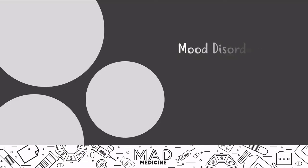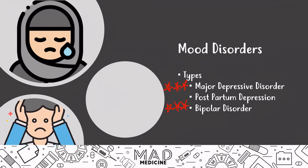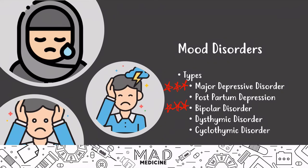When it comes to the USMLE Step 1, there are several types of mood disorders you definitely need to know. They are: major depressive disorder, or depression — a very important one, definitely know this; postpartum depression; bipolar disorder, also a very highly tested mood disorder; dysthymic disorder; and finally cyclothymic disorder. In the upcoming videos, we're going to be discussing each and every one of these in detail — what they entail and how to treat them.